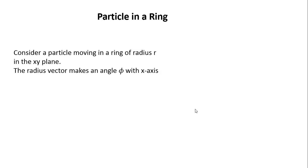We know that all atoms are spherical in shape. A sphere is a three-dimensional object. The two-dimensional precursor to the sphere is a circle. In a circle, we have only two axes, x and y. And a circle is what we refer to as a ring. Consider a particle moving in a ring of radius r in the xy plane.